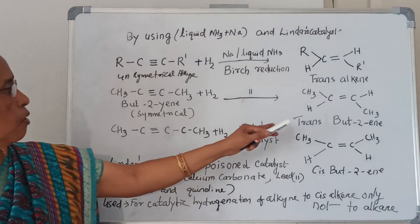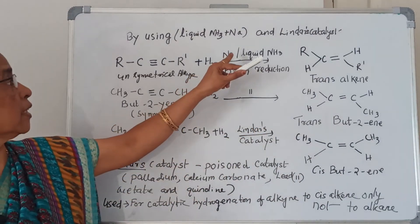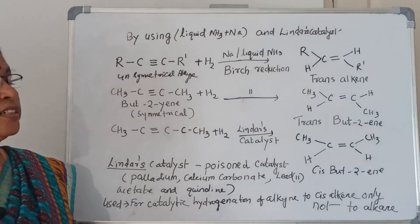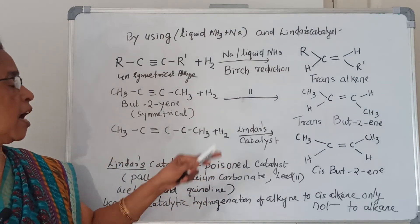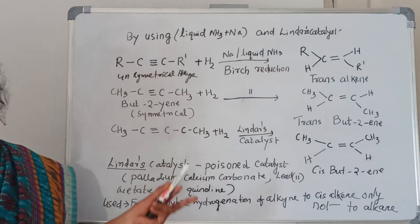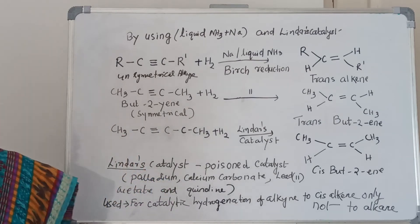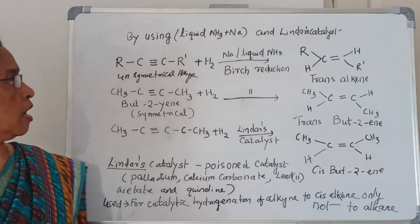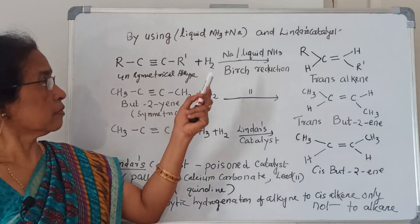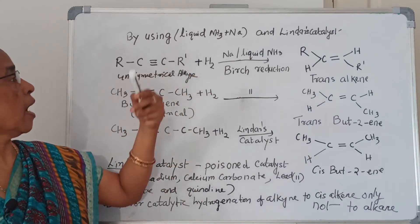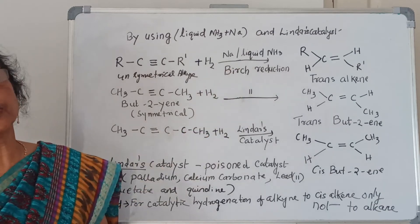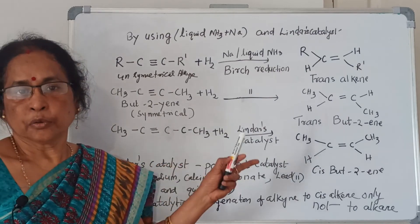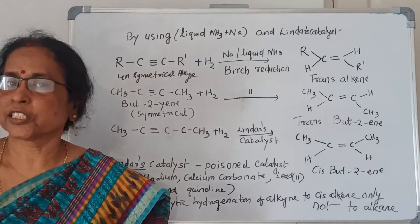Now you can compare how trans-but-2-ene is formed by the reaction with sodium and liquid ammonia — that is called Birch reduction — and how Lindlar's catalyst gives cis-but-2-ene when treated with hydrogen. I hope the treatment with hydrogen in different ways, how palladium charcoal is used, and how liquid ammonia and sodium and Lindlar's catalyst are used is now clear from all the reactions.